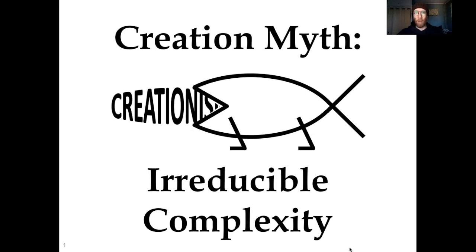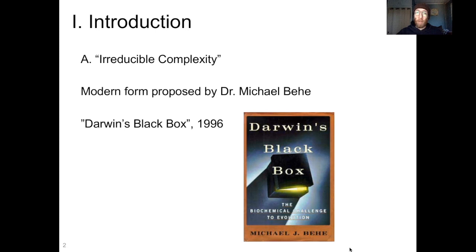Hello everybody, and welcome back to Creation Myths. I have a real classic for you today, because today we are going to cover the creation myth of irreducible complexity. So let's introduce this topic. The modern form of irreducible complexity was proposed by Dr. Michael Behe in his 1996 book, Darwin's Black Box.